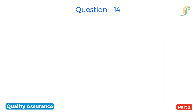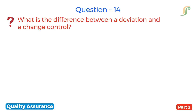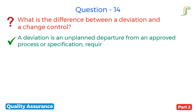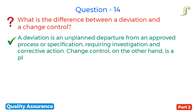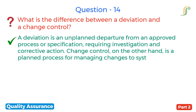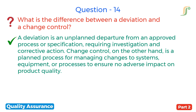The fourteenth question is: what is the difference between a deviation and a change control? A deviation is an unplanned departure from an approved process or specification requiring investigation and corrective action. Change control, on the other hand, is a planned process for managing changes to systems, equipment or processes to ensure no adverse impact on product quality.